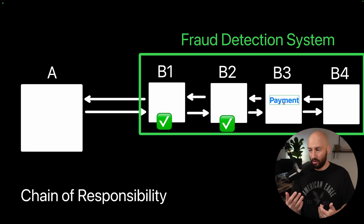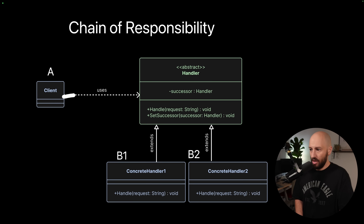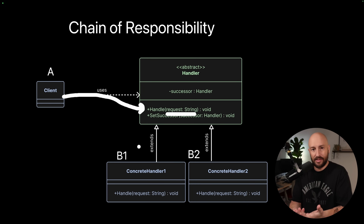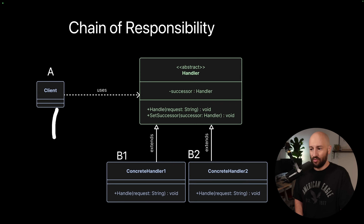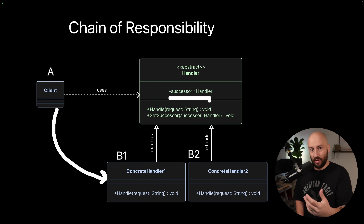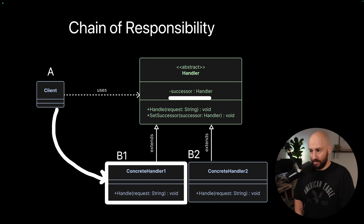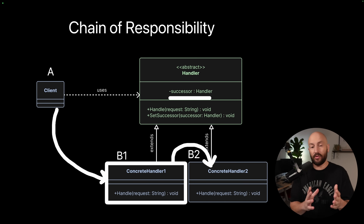As for the class diagram, it's pretty simple. You have component A, and then B1, B2, etc. Component A calls the handle method and passes it the data. In compile time it's working against some abstract class or interface, but in runtime this will be the very first link in the chain — in our previous example, B1. Each one of these handlers contains a reference to the successor — who's the next link in the chain — meaning concrete handler one will have internally as a field concrete handler two. All it needs to do once it finishes handling the request is call the handle method in concrete handler two, passing the data along.